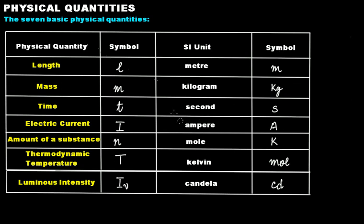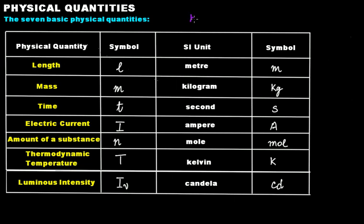These are the symbols for the SI units: lowercase m for meter, kg for kilogram, lowercase s for second, uppercase A for ampere, mol for mole, uppercase K for Kelvin, and cd for candela. These are called basic units. Using these basic units — the SI units of these seven physical quantities — we derive the SI units of all other physical quantities, and that's why they are called derived units.